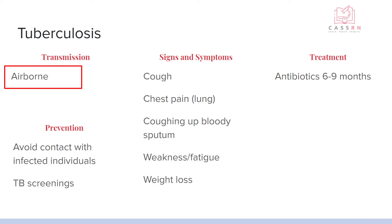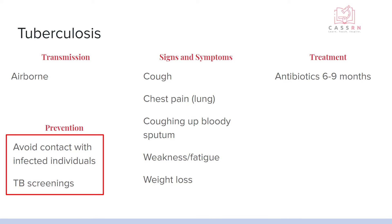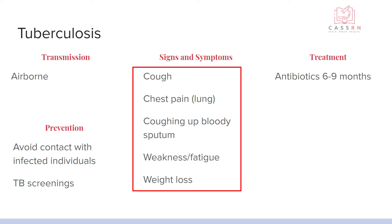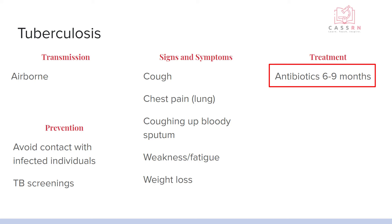Tuberculosis is something we all get screened for as nurses. This is airborne. The only way to prevent it is to avoid contact with infected individuals, and we do TB screenings as a secondary form of prevention. Signs and symptoms are respiratory: cough, chest pain, coughing up bloody sputum, weakness, fatigue, and weight loss due to the energy expenditure required to breathe. Treatment is actually six to nine months of antibiotics — this is because the TB bacteria grows very slowly and is only affected by antibiotics at a certain window in its life cycle, so you have to take the antibiotic for a very long time to catch all the bacteria in the lungs.